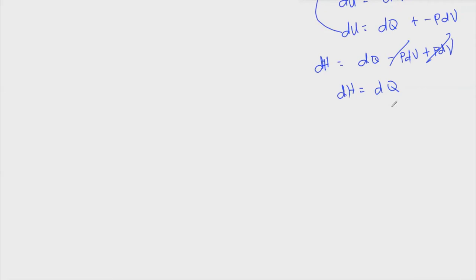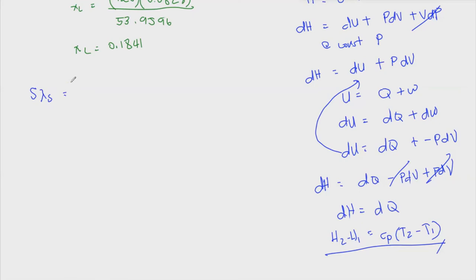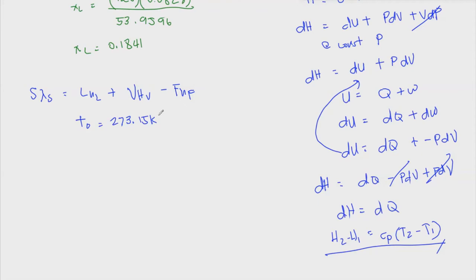Going back to our enthalpy balance, we can substitute Cp times (T2 minus T1) for each enthalpy term. We set a datum temperature T_0 equal to 273.15 K. When the problem doesn't specify an initial reference condition, we use this datum temperature, and take delta T as the temperature at the given condition minus T_0.